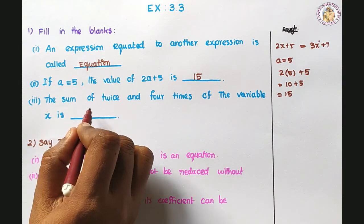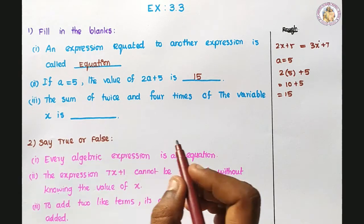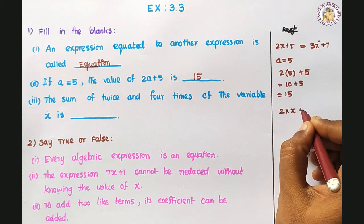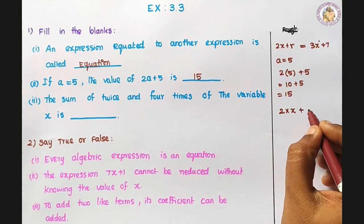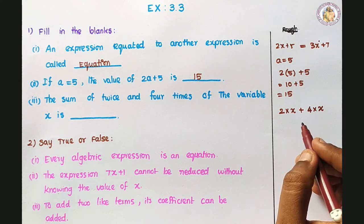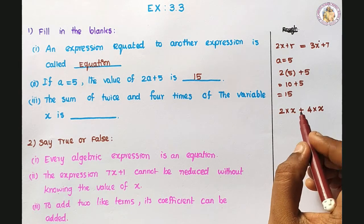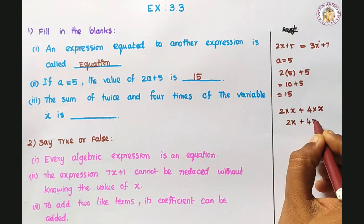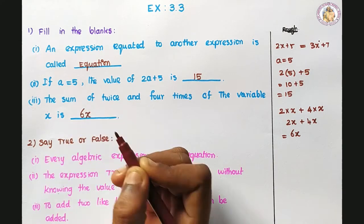Third one: the sum of twice and 4 times of the variable x is dash. Twice means 2 times the variable x, and 4 times means 4 into x. Sum means plus, so 2x plus 4x equals 6x. So 6x is the answer.